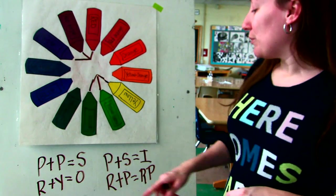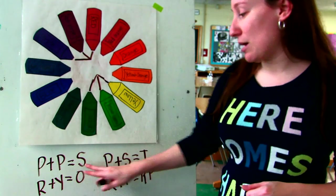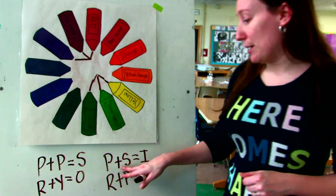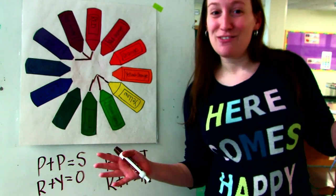So again, you might want to write this down in your sketchbook. Primary plus primary equals secondary. Primary plus secondary equals intermediate. And that's it for video one.